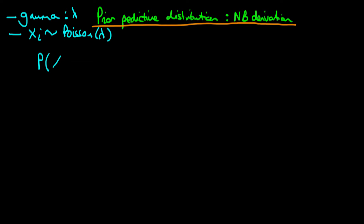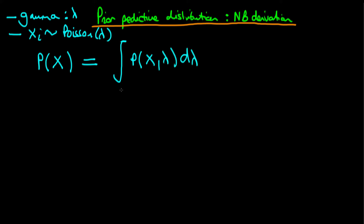We know this is itself a marginal distribution, and we know that we can get a marginal distribution just by integrating out all lambda dependence of the joint density of this observation x and lambda, integrated from lambda equals 0 to lambda equals infinity.